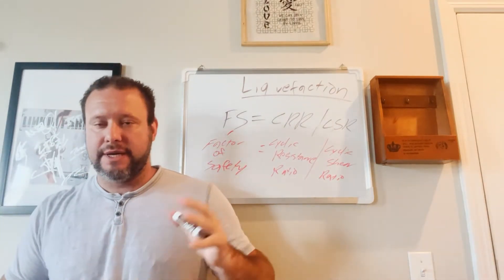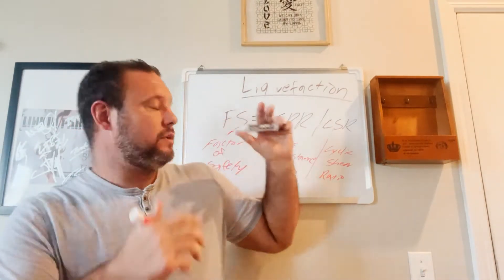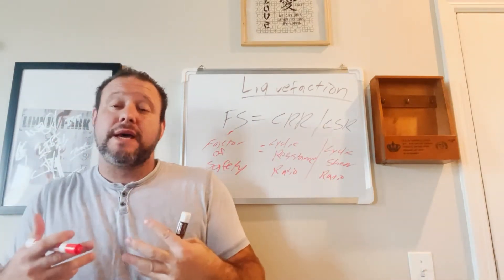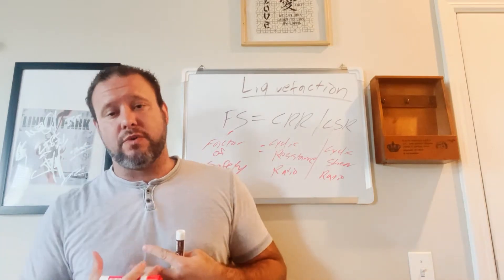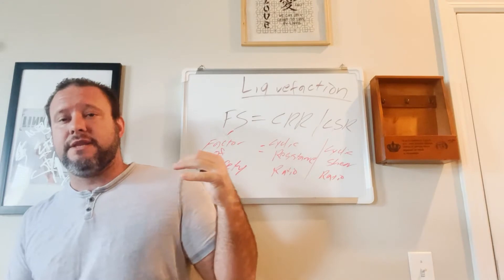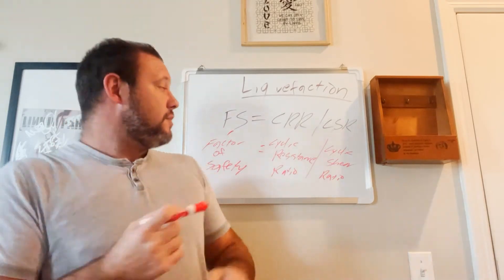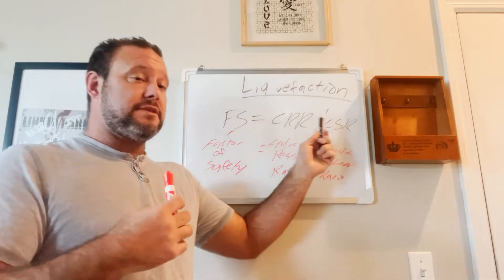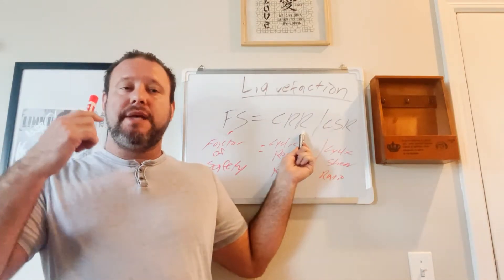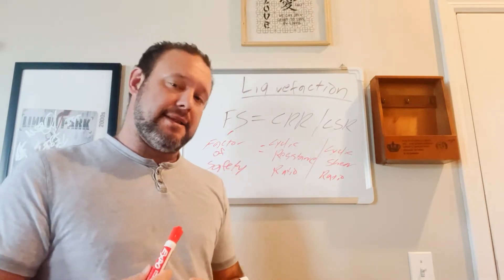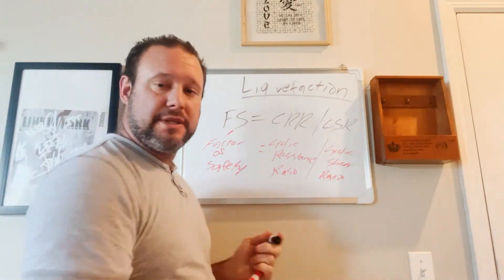So that is kind of what this whole equation looks like, but really it's like, what is all of that? The cyclic shear ratio is a measure of the earthquake loading or the cyclic shear stress that's induced into the soil. And then the cyclic resistance ratio is actually the soil resistance.